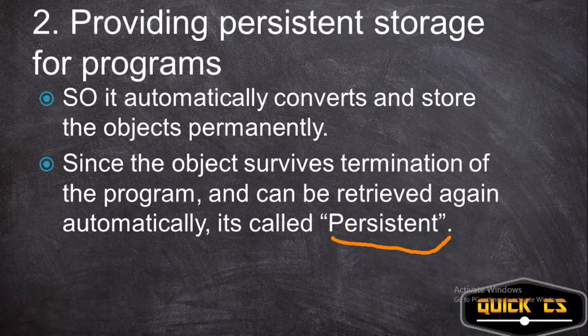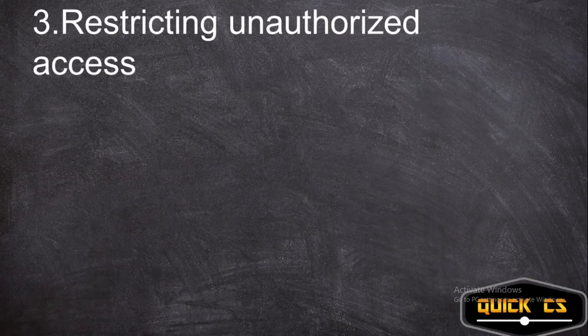So the object survives the closing of the program and is available again — that's why it's called persistent. That covers the two storage advantages. Now let's look at the security advantages.